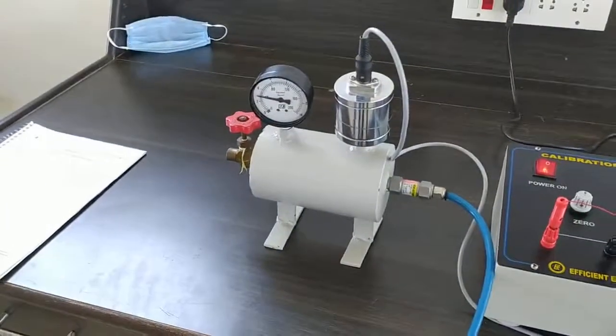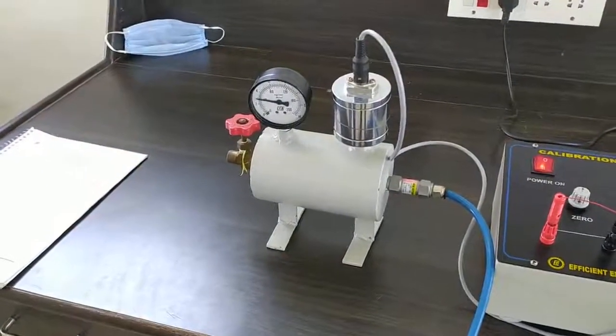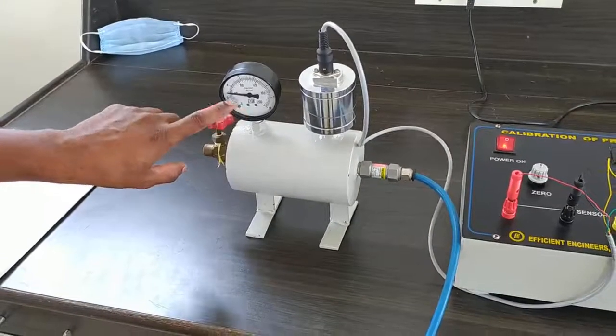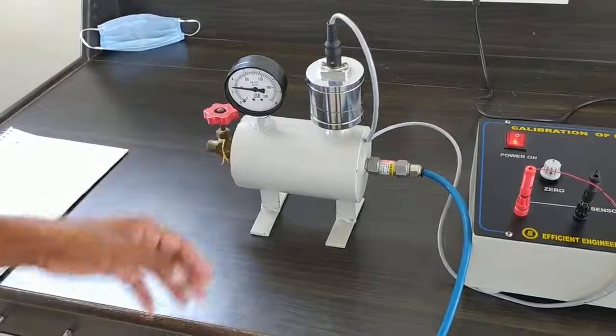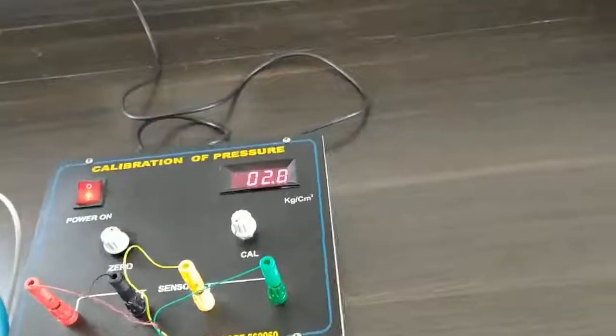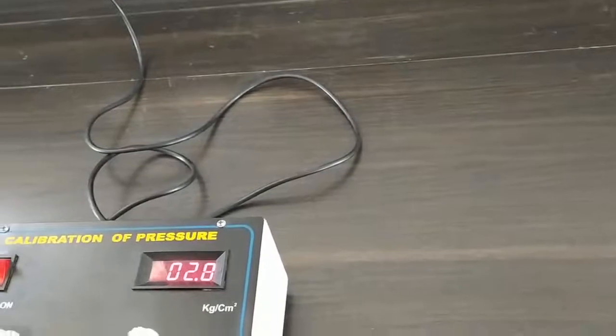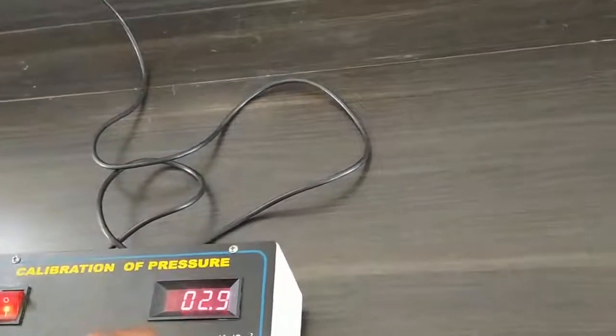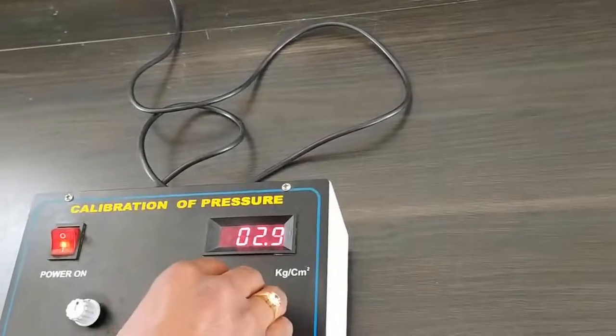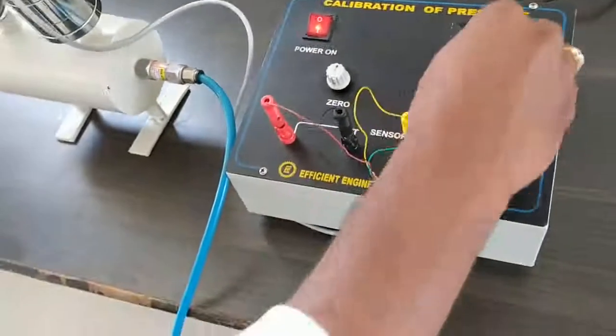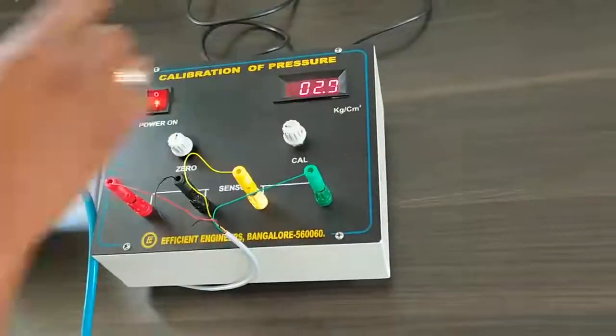Yes, we are at the pressure of 3 kg per centimeter square, which is shown in the dial type of pressure cell and same in the analog. But in the digital, it is showing 2.8. We can see that there is some error. We have to calibrate this one with the help of this calibration knob. We have to use this knob and set for 3 kg per centimeter square. Yes, it has been set.